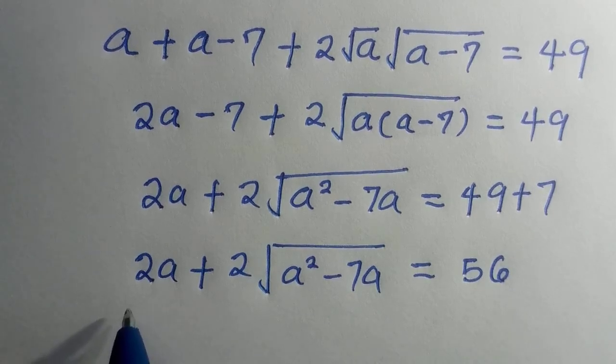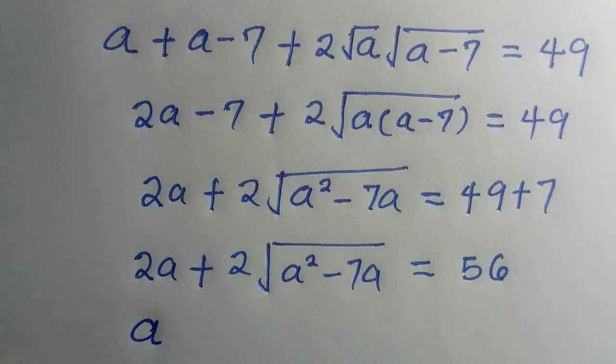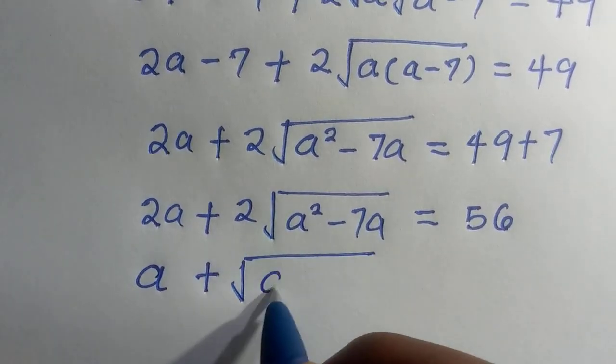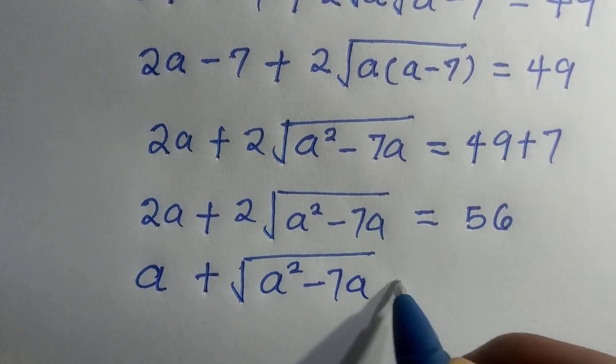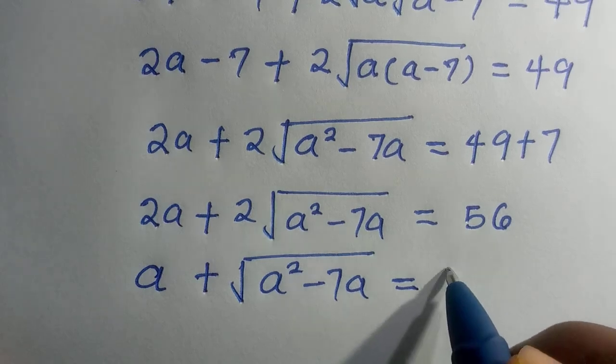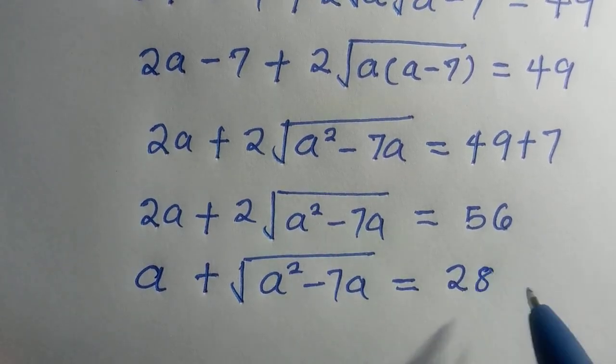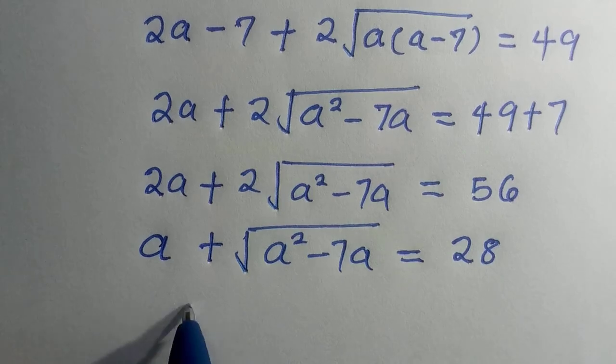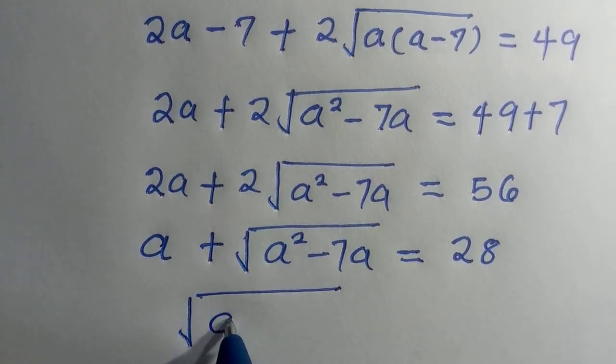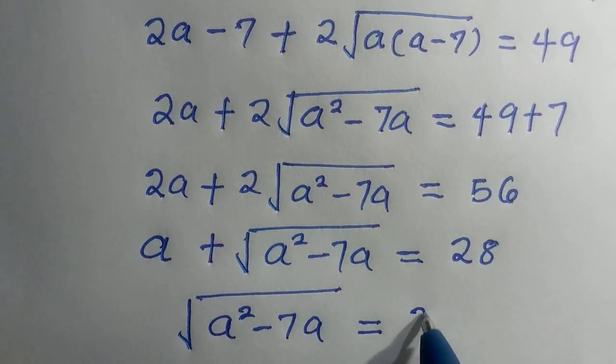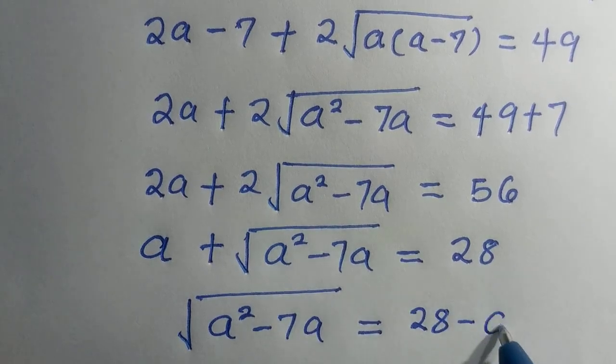Where we divide both sides by 2, we have this as a + √(a²-7a) = 28. So having this, we take a to the other side, and we have √(a²-7a) = 28 - a.